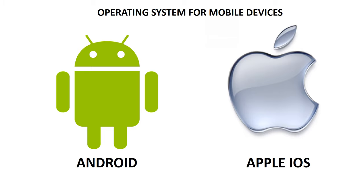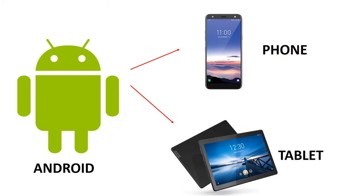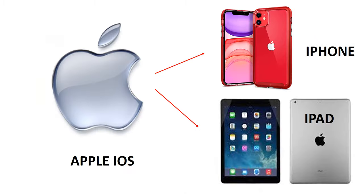Operating systems for mobile devices are Android and Apple iOS. Android is the most common mobile operating system used for mobile phones and tablets. iOS is used on iPhone and iPad.